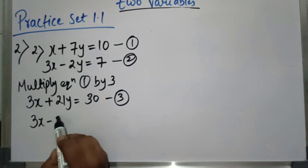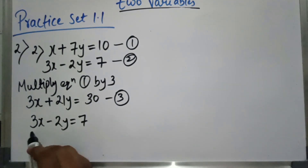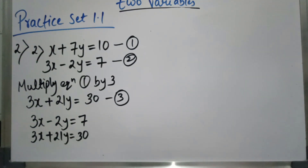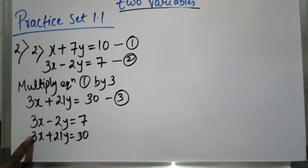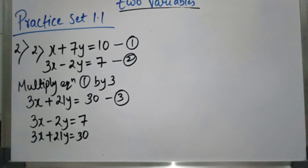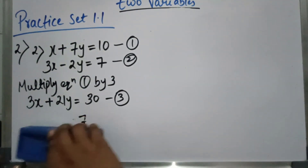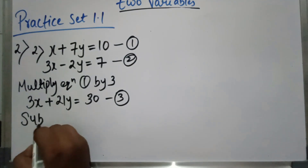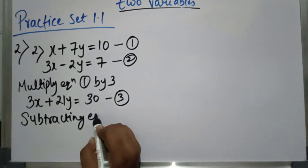We write 3x minus 2y equal to 7 as equation 2, and 3x plus 21y equal to 30 as equation 3. Now I will eliminate 3x by subtracting. We need to write the statement: subtracting equation 2 and 3.